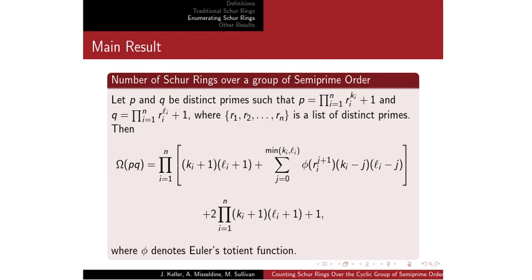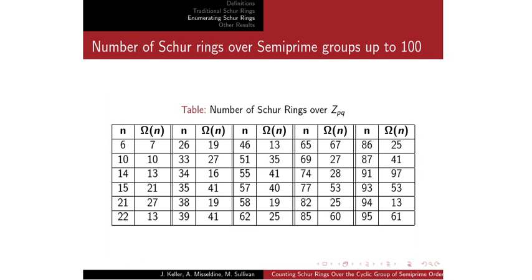Some further work we did: we verified with a computer all of the Schur rings over semi-prime groups up to 100. These are all the semi-prime groups up to 100 presented in a nice table.